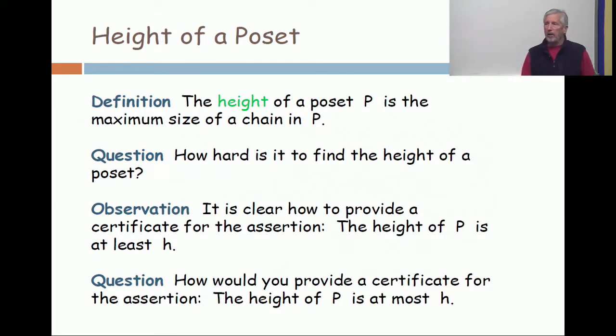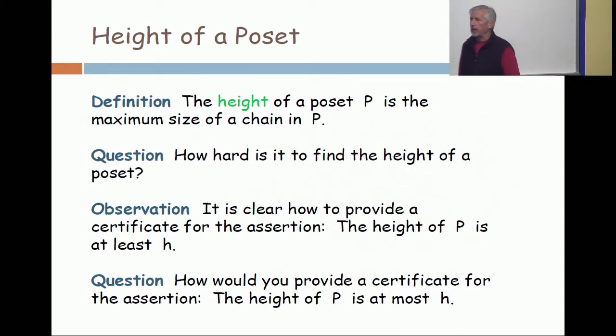And the definition of height - height is the maximum size of a chain. So the natural applied problem is: how hard is it to find the height? We make these observations. It's clear how to provide a certificate for an assertion that the height of P is at least something.